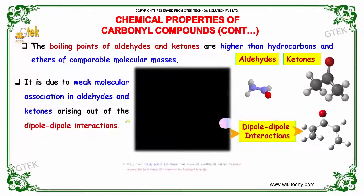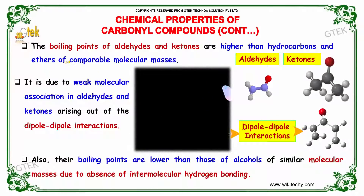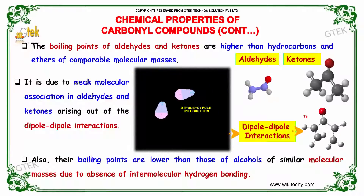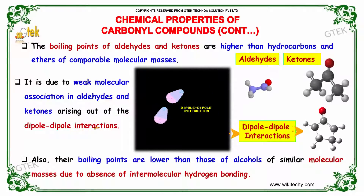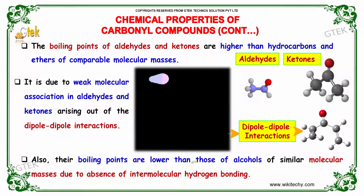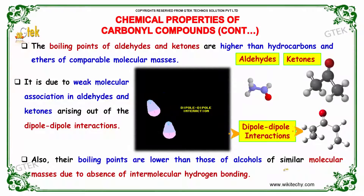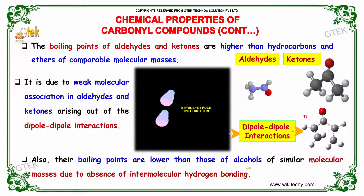The boiling points of aldehydes and ketones are higher than hydrocarbons and ethers of comparable molecular masses. This is due to the weak molecular association in aldehydes and ketones arising out of dipole-dipole interactions. Also, the boiling points are lower than those of alcohols of similar molecular masses due to the absence of intermolecular hydrogen bonding.